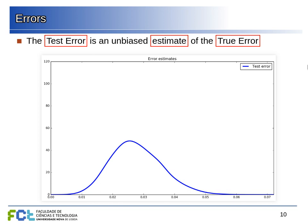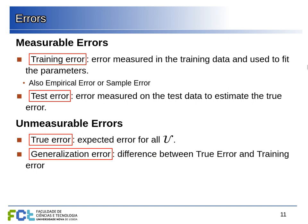The larger the test set, the narrower the distribution of estimates — the lower the probability of going too far from the true error. This is the law of large numbers: the more you average, the narrower the interval. So we have two measurable errors: the training error, measured on points used to adjust parameters, and the test error, measured outside the training set, which gives a random sample estimate of the true error.